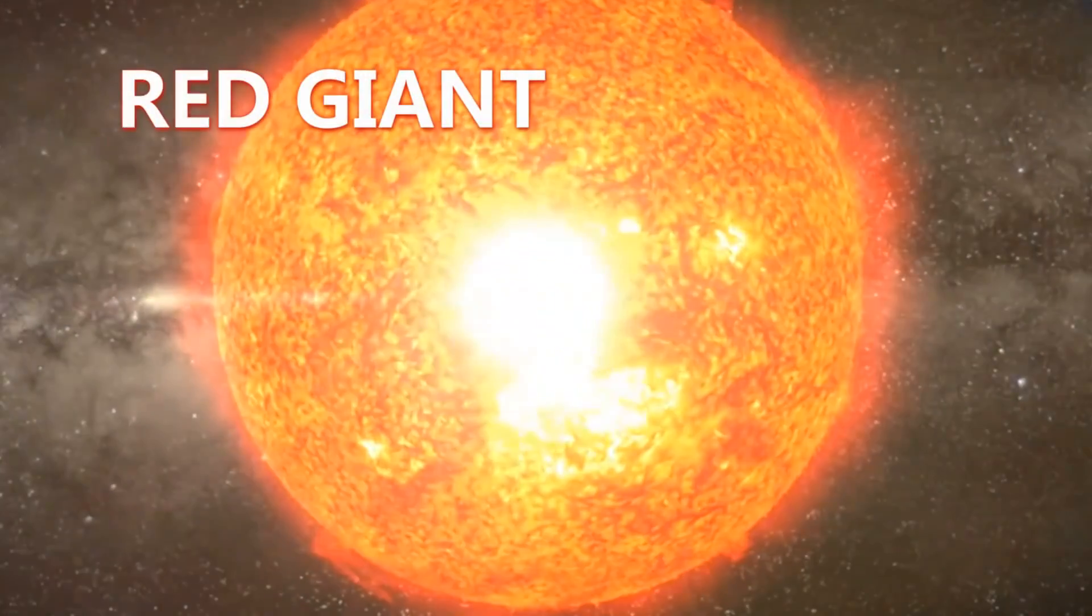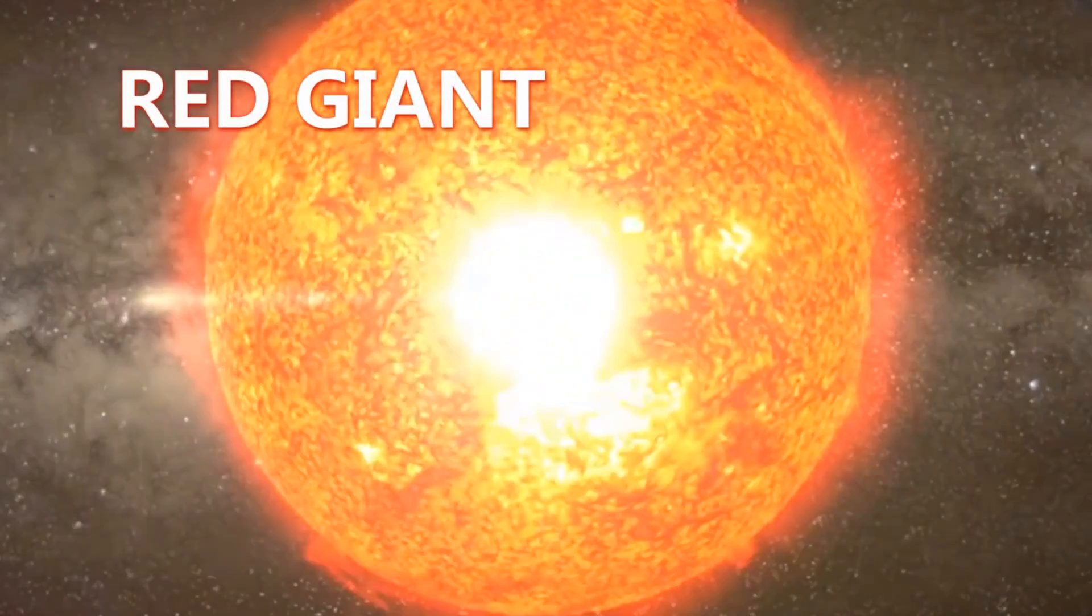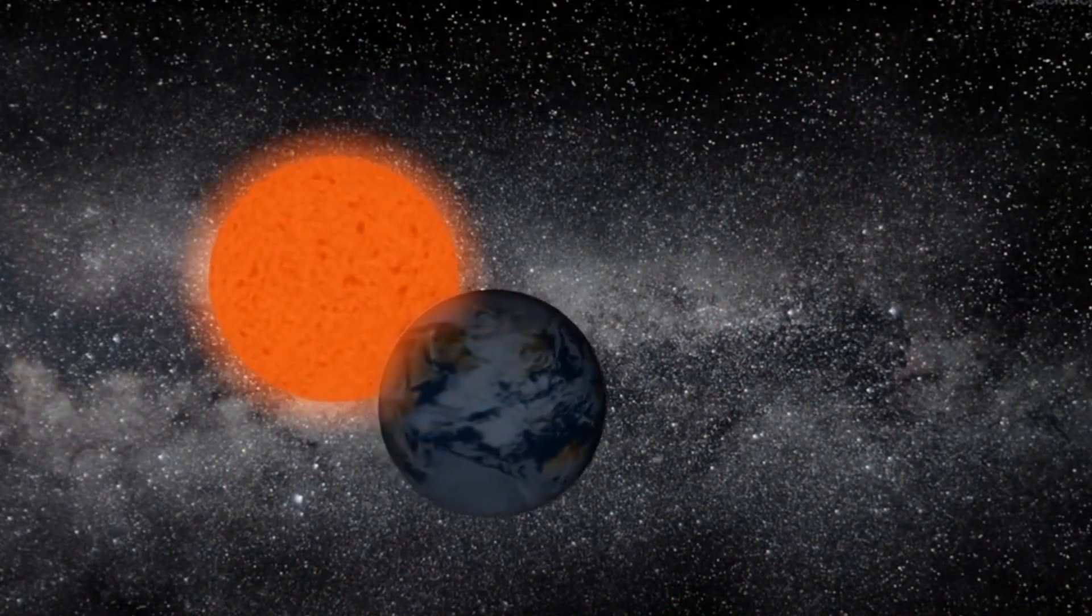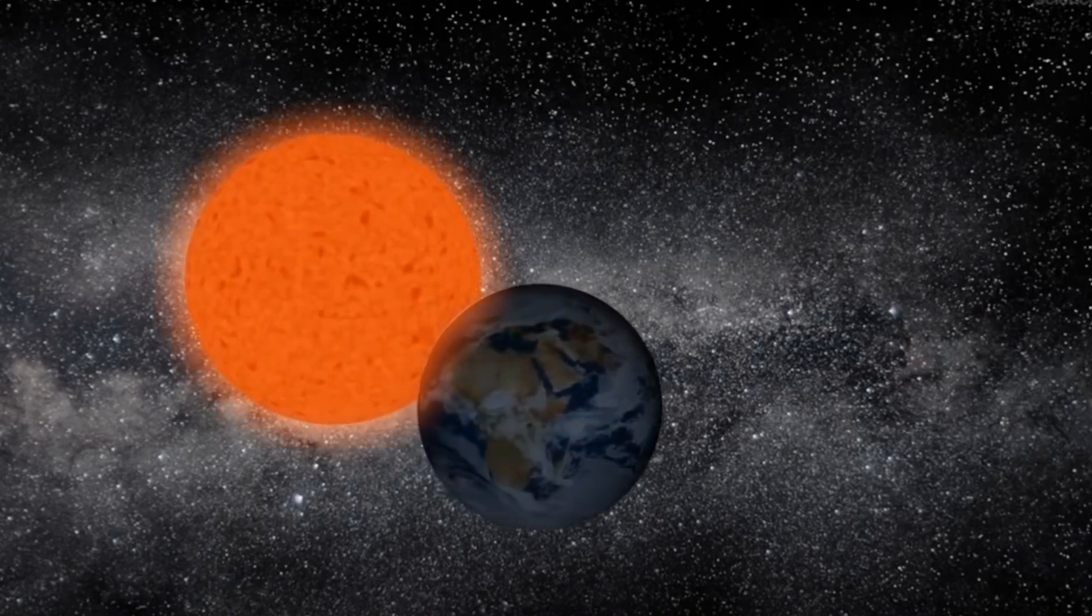A red meaning that it's going to be cooler. And it's going to be so large that its outer radius is actually going to reach the Earth's orbit. It's going to be a huge star. And then eventually it'll blow off its outer layers and become a white dwarf star. And that will be its final phase.